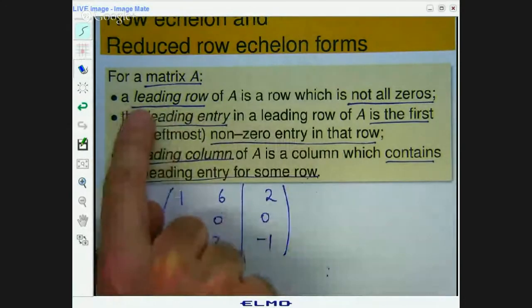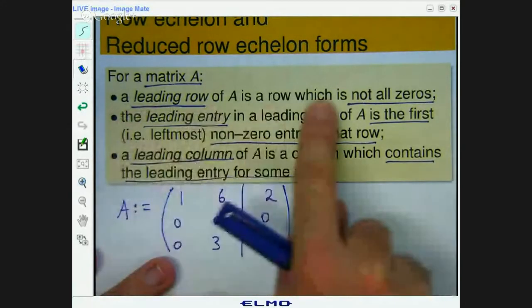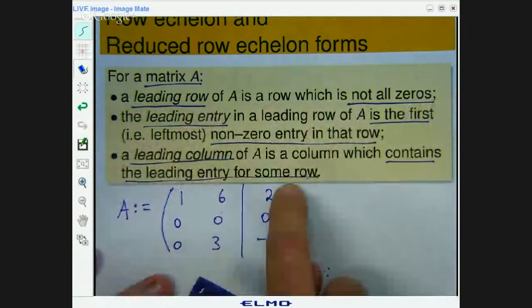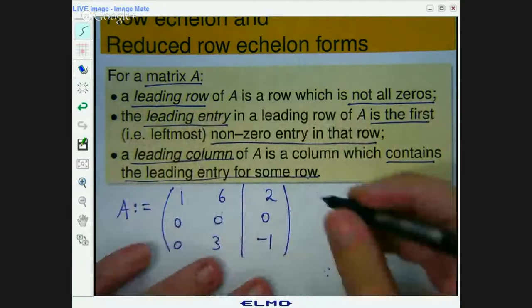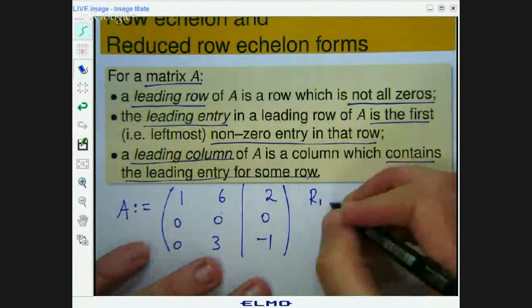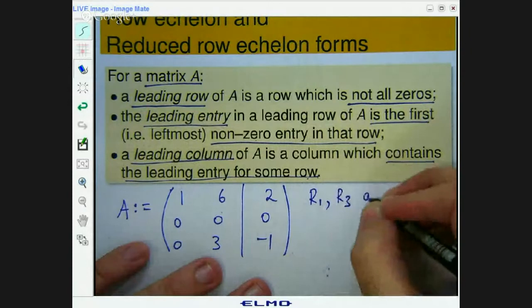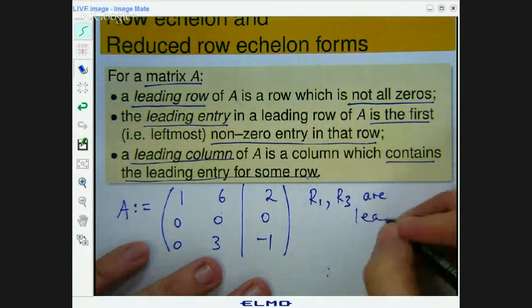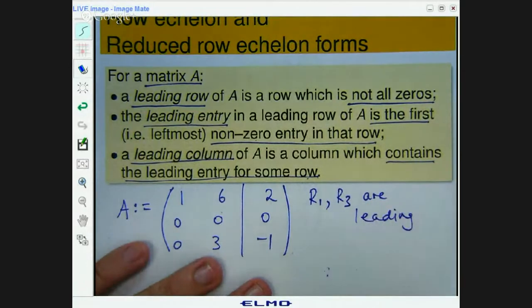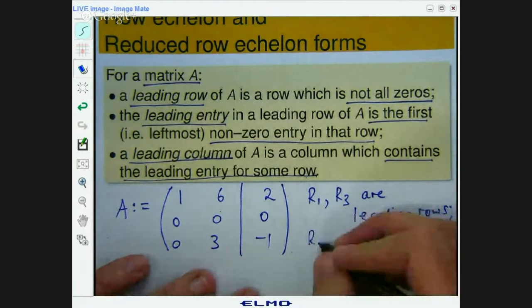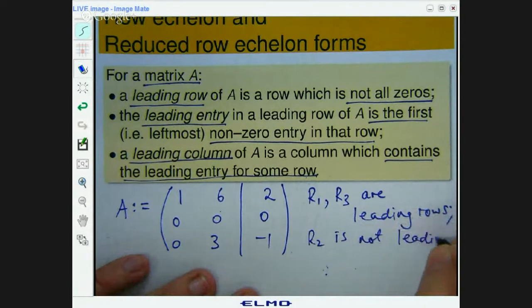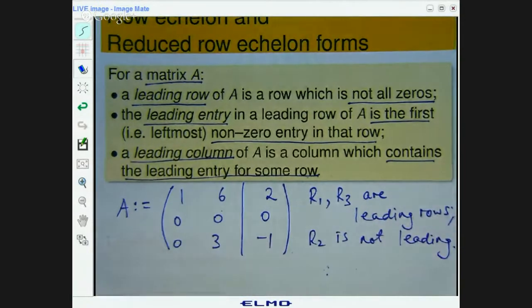Ok, so let's identify the leading rows first. A row which is not all zeros. Well, row 1 is not all zeros. Row 2 is all zeros. And row 3 is not all zeros. So you would say row 1 and row 3 are leading rows. Row 2 is not leading. Ok, pretty easy.